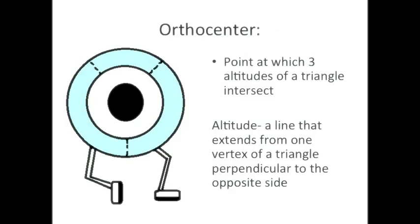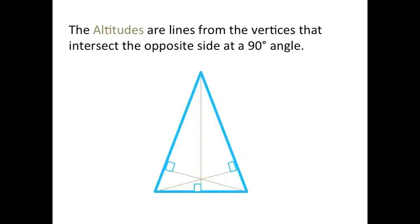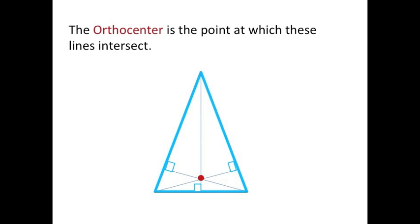The orthocenter is the second creature we'll be looking at. We're also going to look into altitudes and more triangle points of concurrency. Now we're going to go through what we need to know to find the orthocenter, which is our next criminal point of concurrency. The altitudes are lines from the vertices that intersect the opposite side at exactly a 90-degree angle. The orthocenter is the point at which these lines intersect.